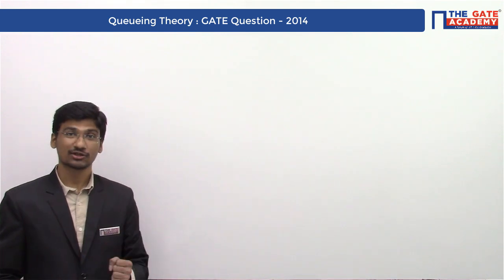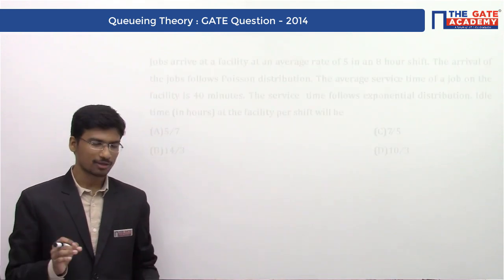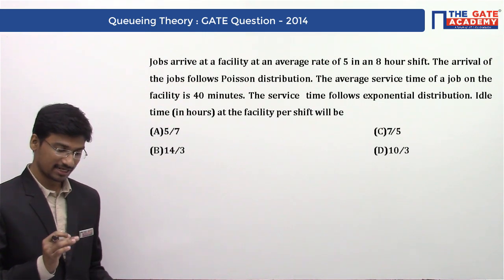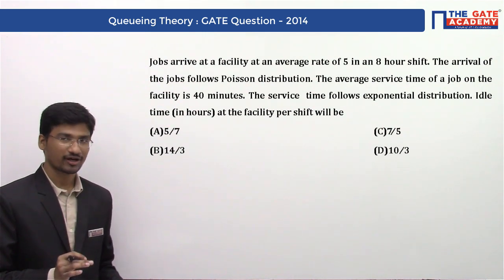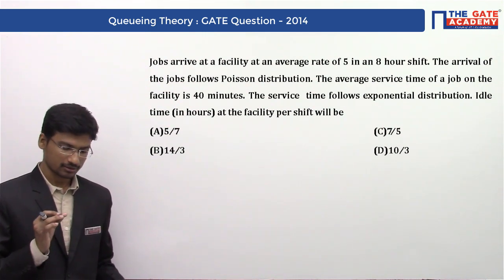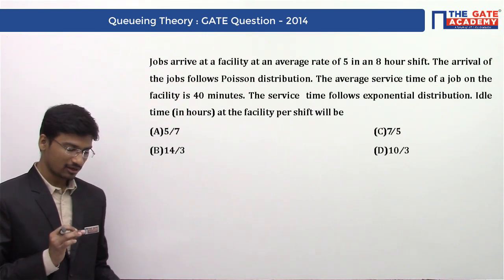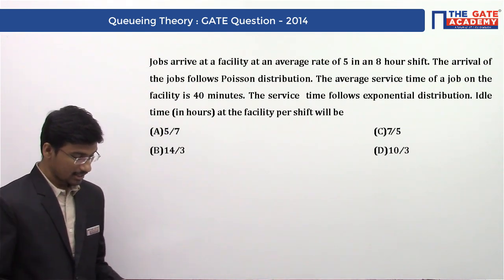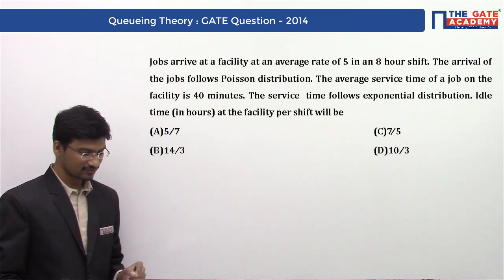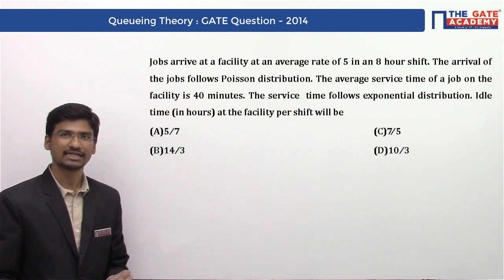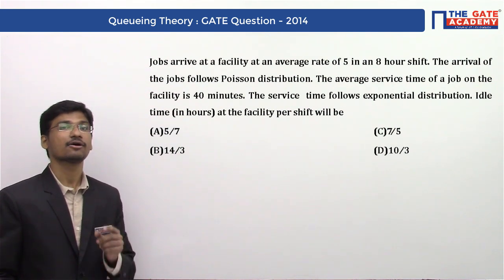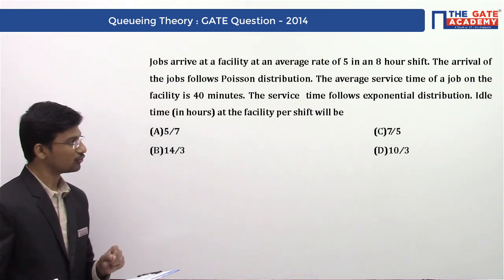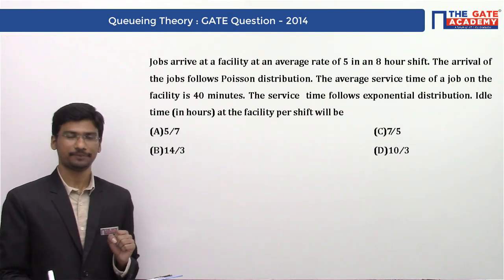The question goes like this: Jobs arrived at a facility at an average rate of 5 in an hour. The arrival of the jobs follows Poisson distribution. The average service time of a job on a facility is 40 minutes. The service time follows exponential distribution.